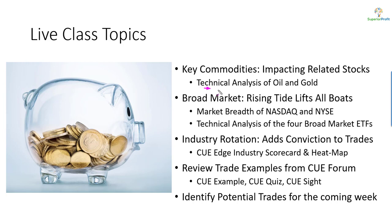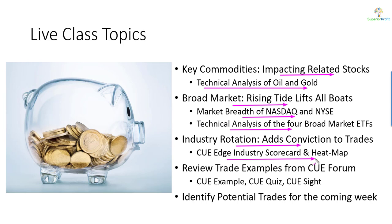In today's session we will look at oil and gold — these two commodities using technical charts, as they tend to impact related stocks. When swing trading stocks, we like to align them with the market's direction, which we will study using NASDAQ and NYSE market breadth and technical analysis of market ETFs. We will also align trades with industry rotation, studied using industry scorecard and heatmap. Along the way we may look at recent trade ideas from our traders forum and look for potential trades in the coming week.